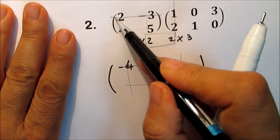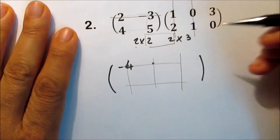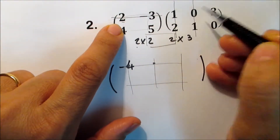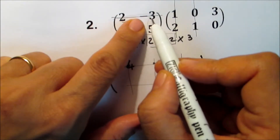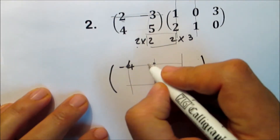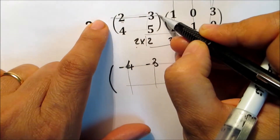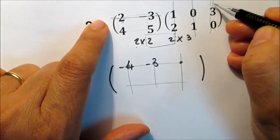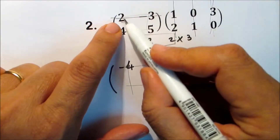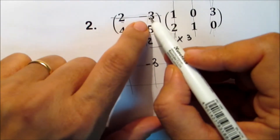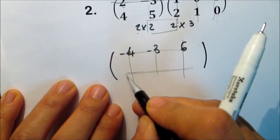To find the second element in the first row, stay in the first row of the first matrix and go to the second column of the second matrix. Two times zero is zero, and negative three times one is negative three, so it's negative three. For the third element in the first row, go to the third column of the second matrix. Two times three is six, plus negative three times zero is zero, so it's six.